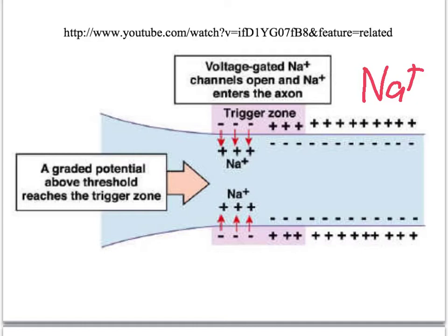And what we have is a difference in potential. Instead of the relatively negative situation on the inside and positive on the outside, we have the opposite: lots of positive ions inside the cell. And that potential difference, or difference in charge, is what causes that electrical impulse to move along the cell membrane.